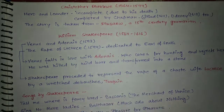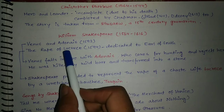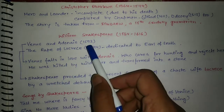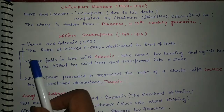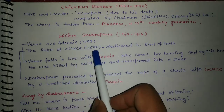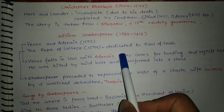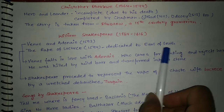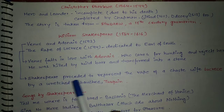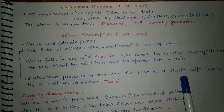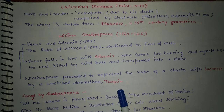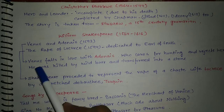William Shakespeare's Venus and Adonis was published in 1593, and The Rape of Lucrece in 1594, dedicated to the Earl of Southampton. Shakespeare represented the rape of a chaste wife, Lucrece, by the debauched Tarquin.